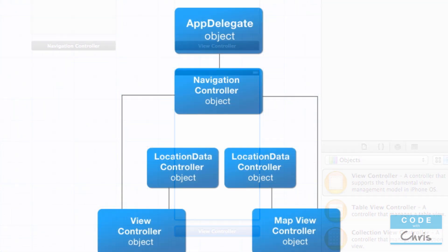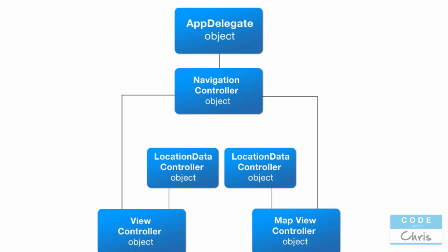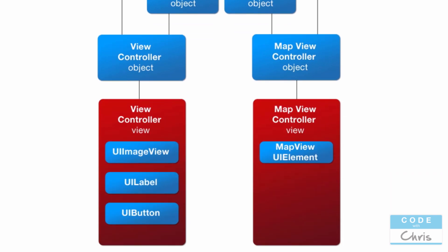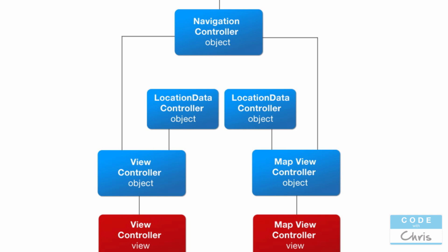The app flow looks like this: the entry point is still the app delegate object, but now the navigation controller is the object that manages the other two view controllers. Correspondingly, the two view controllers have their own views described by the storyboard. In the diagram I also have a location data controller object pointing to each view controller, because in each view controller we created an instance of that location data controller to get the location object.